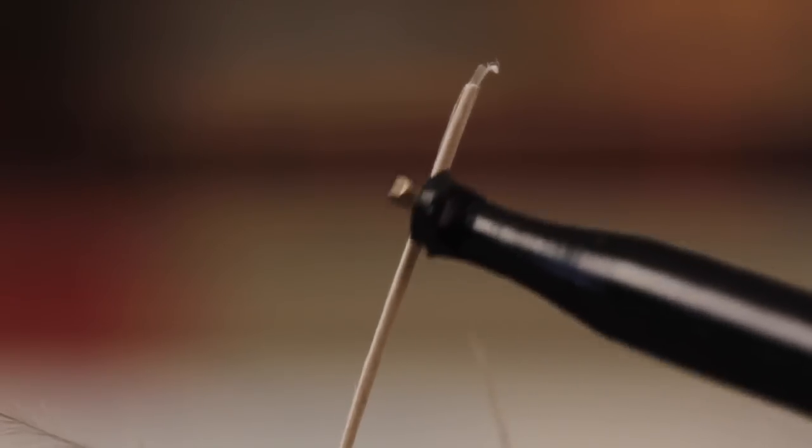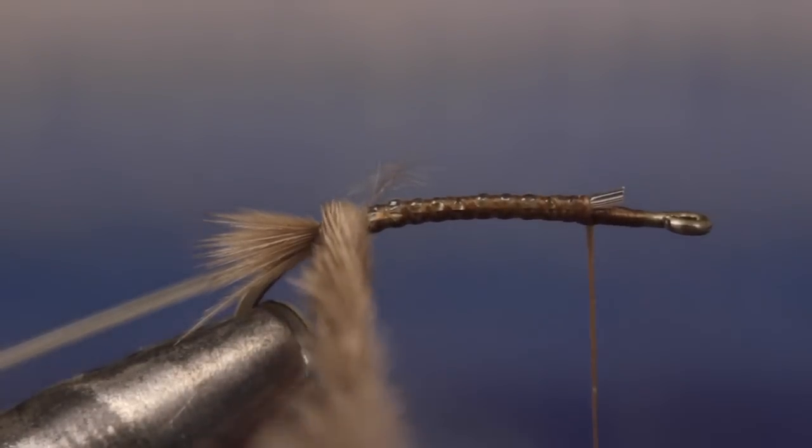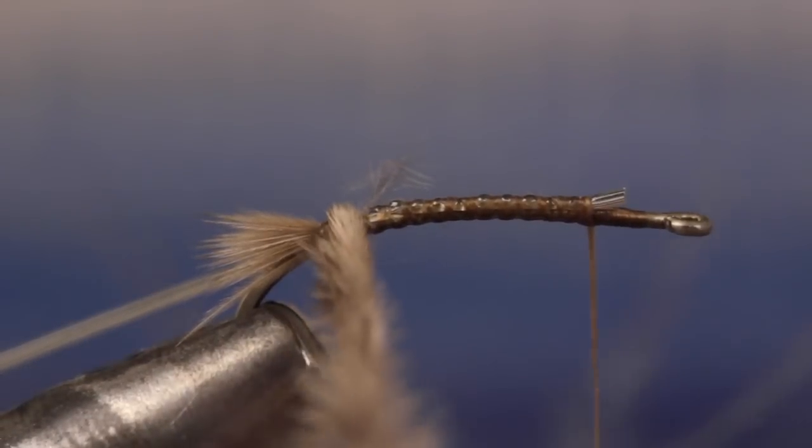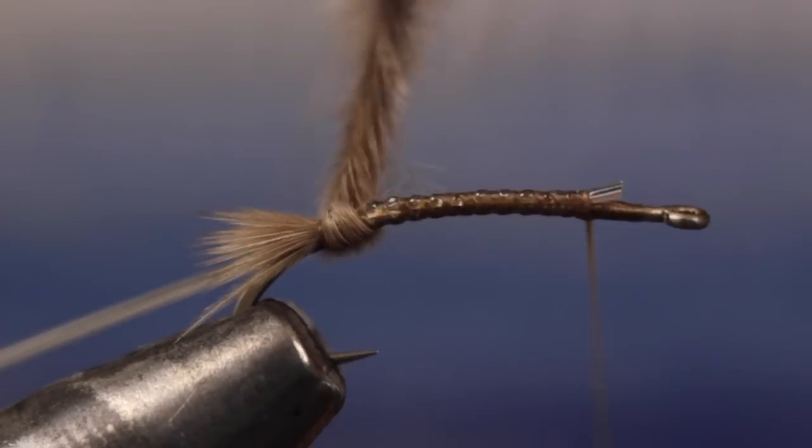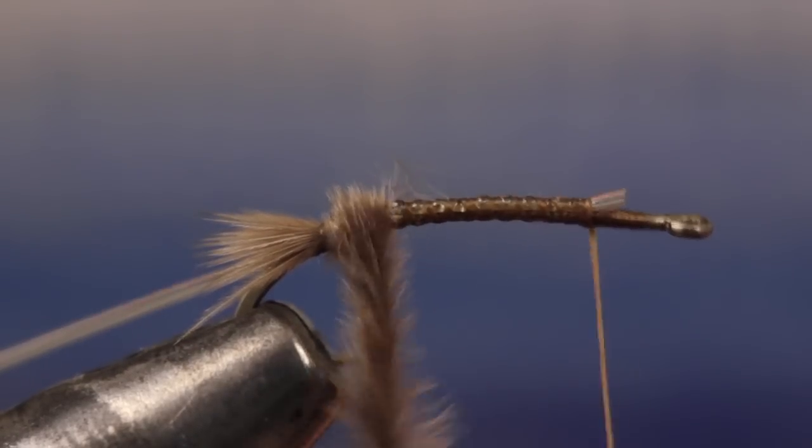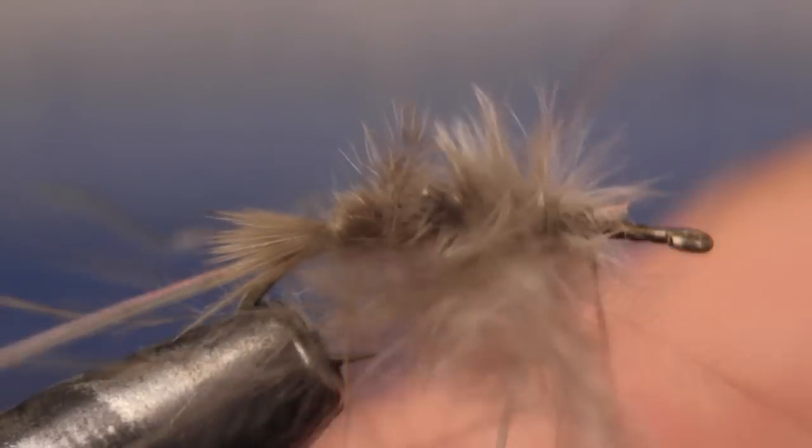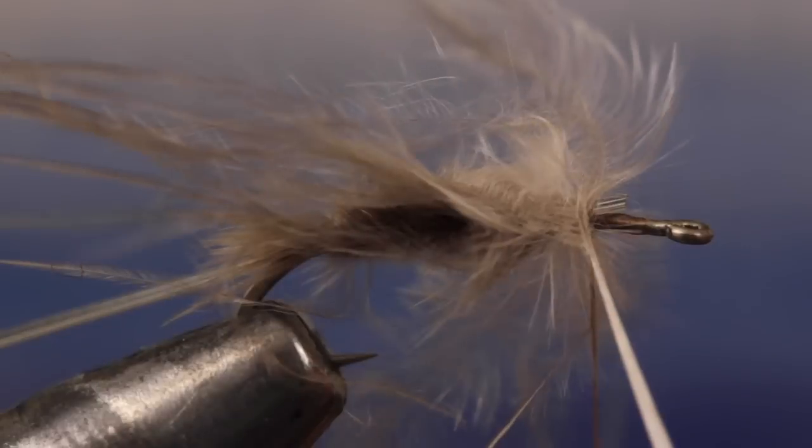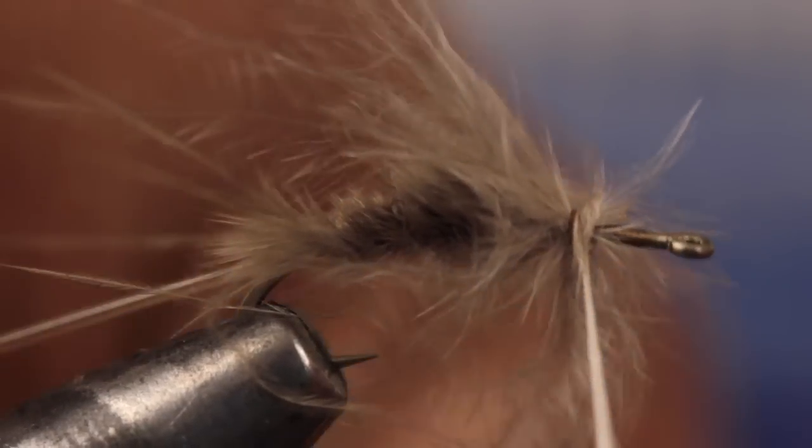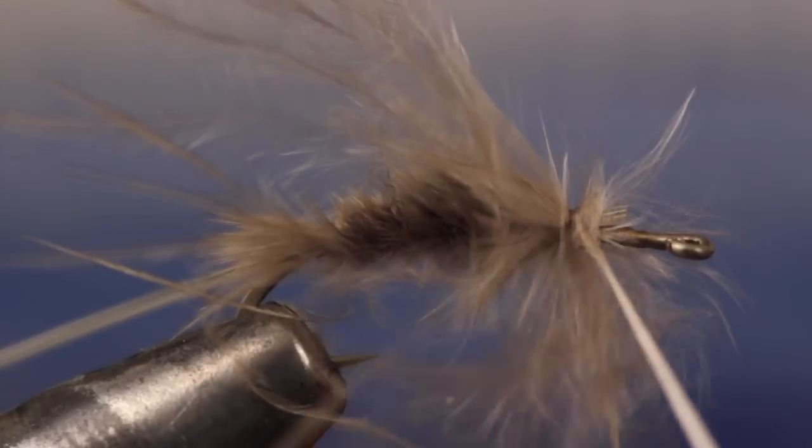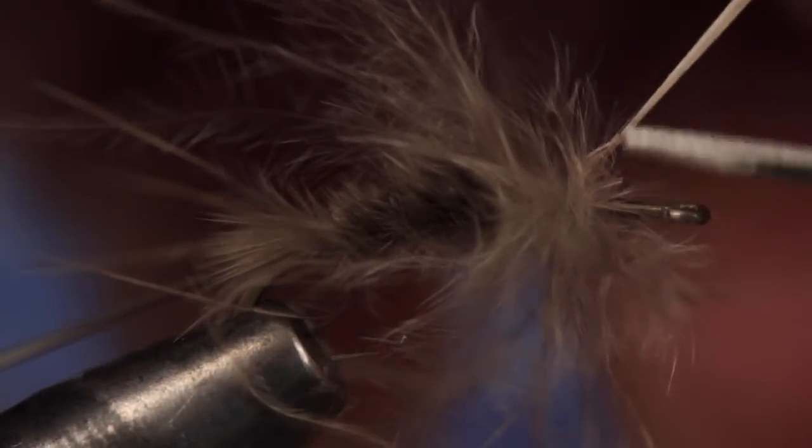With your hackle pliers, get hold of the bare stem and begin gently twisting the fibers into a rope. Five or six twists ought to do it. Begin counter wrapping this fuzzy rope in touching turns up the hook shank. You should find that you're about down to bare stem when you reach the tying thread. Take normal wraps with the thread to secure the stem, then reach in with your tying scissors and snip the excess stem off close.